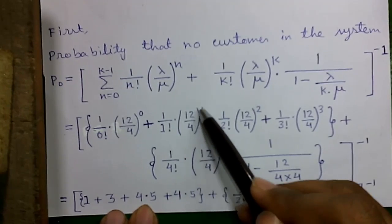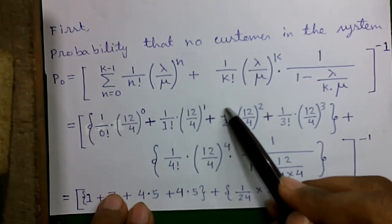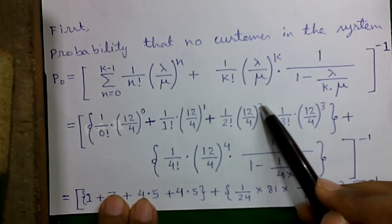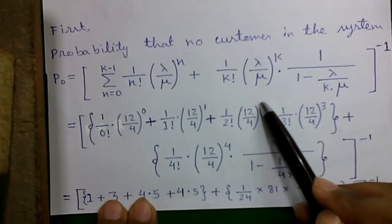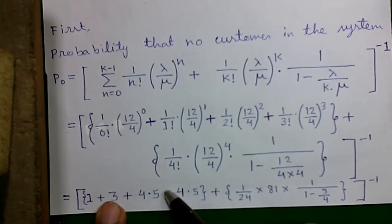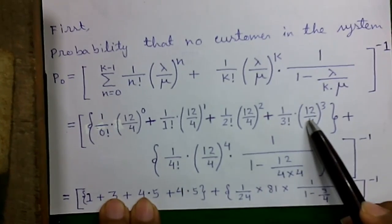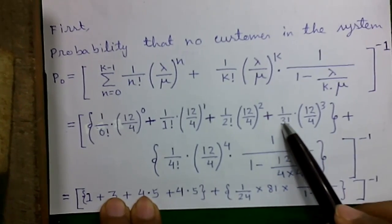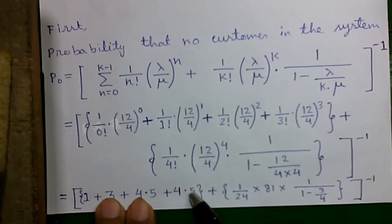For n=2: 1/2! × 3^2 = 1/2 × 9 = 4.5. For n=3: 1/3! × 3^3 = 1/6 × 27 = 4.5. So the summation part totals 1 + 3 + 4.5 + 4.5 = 13.